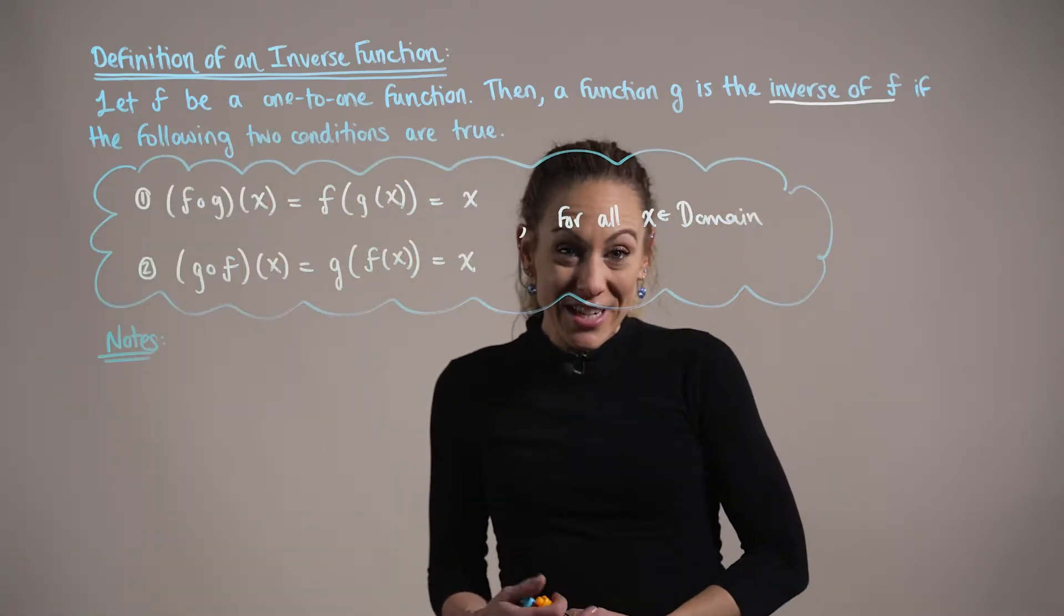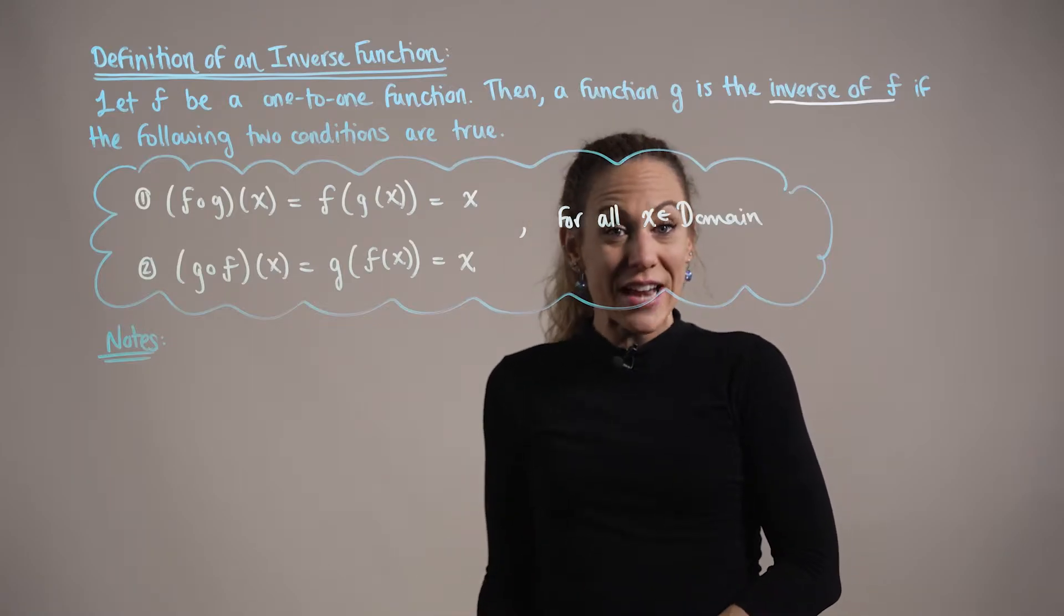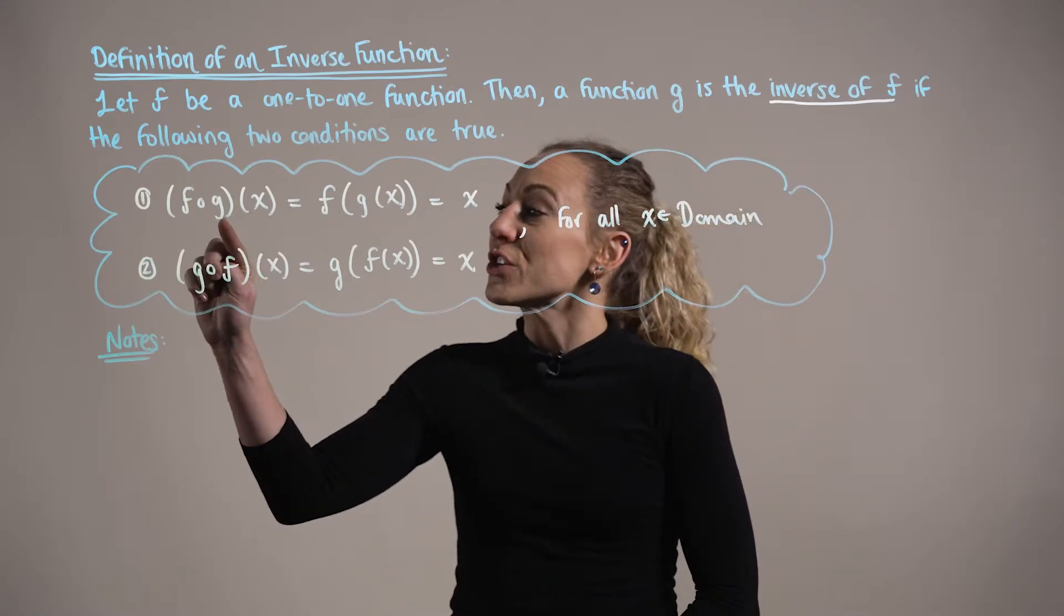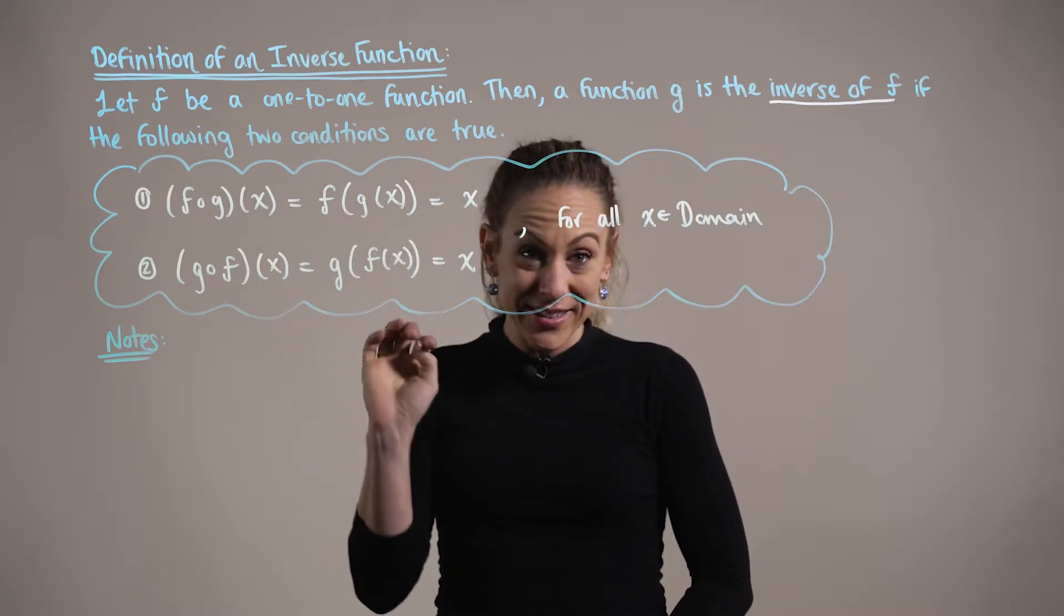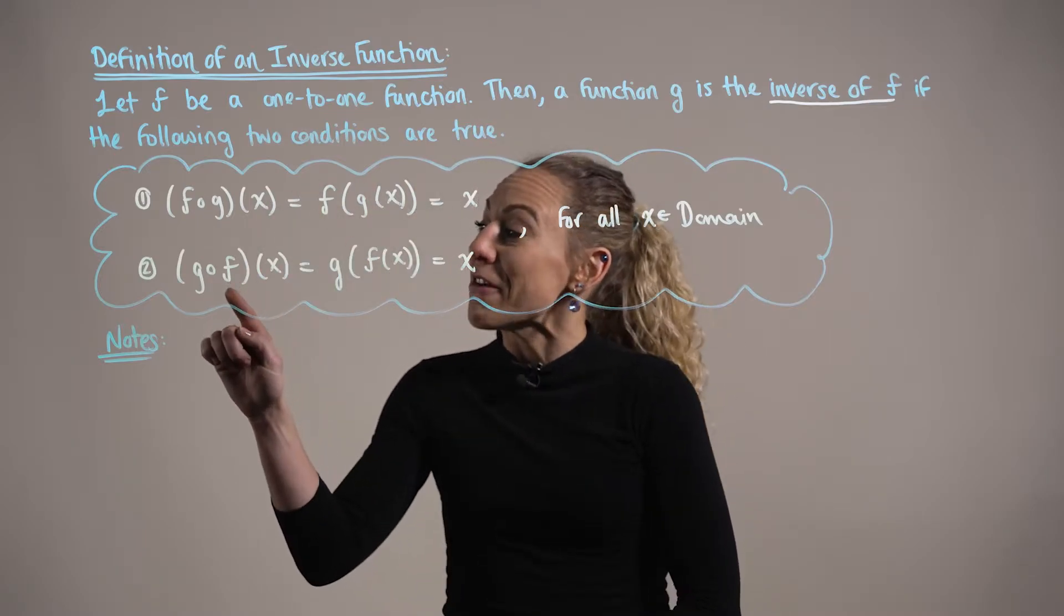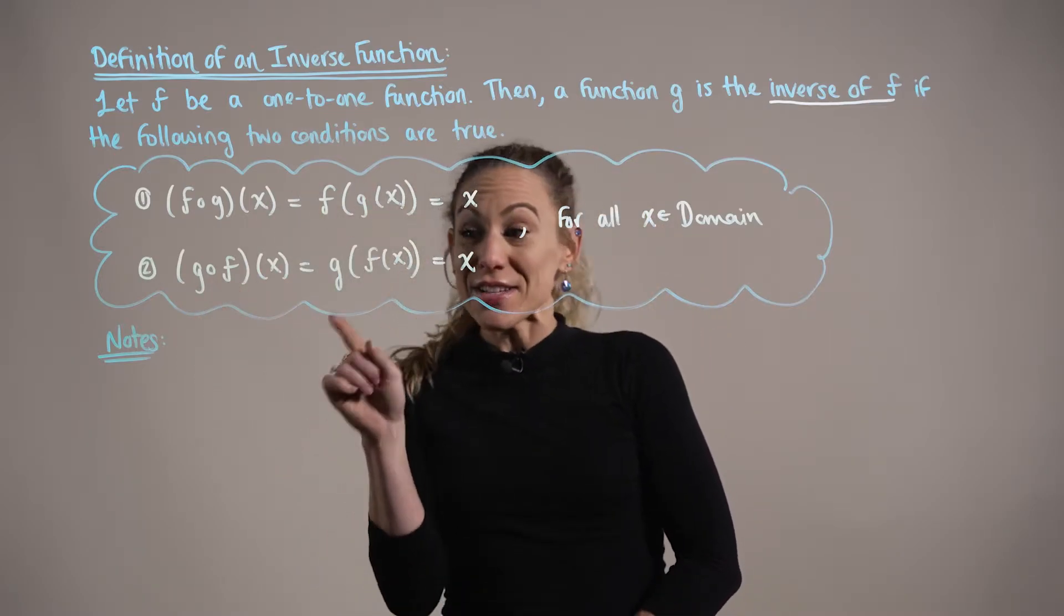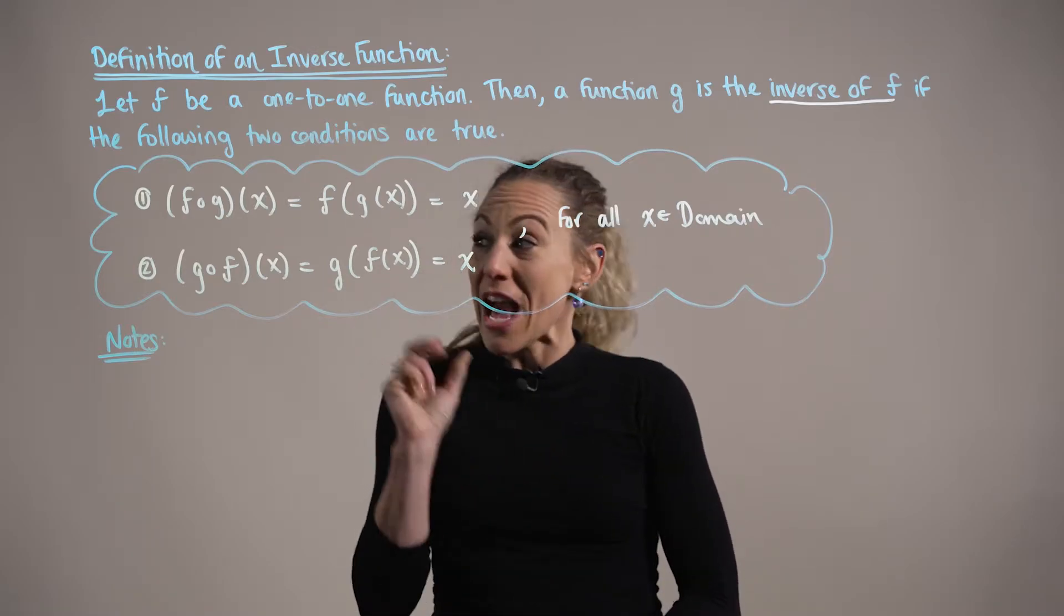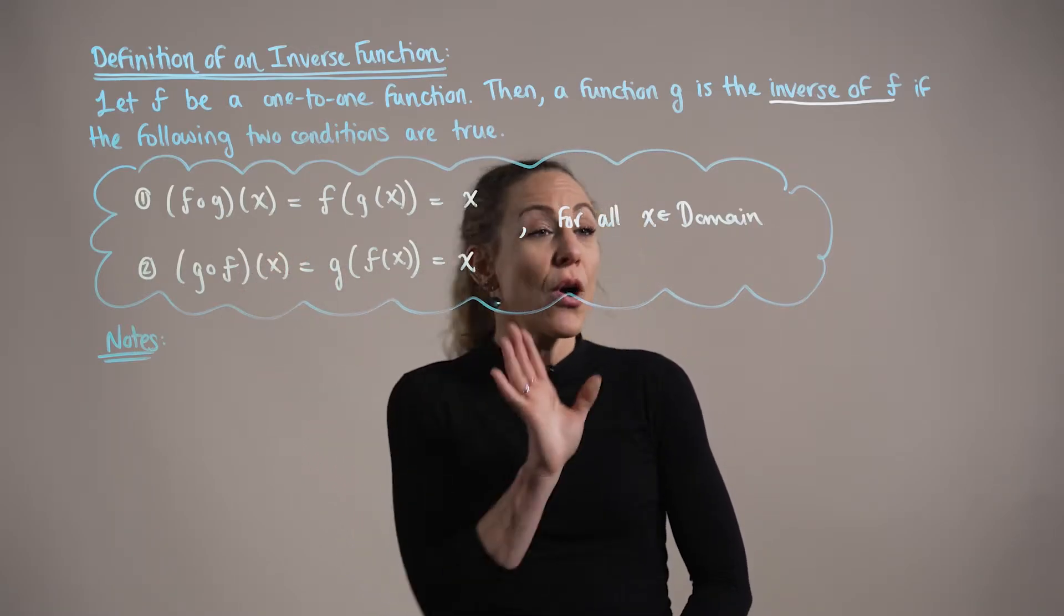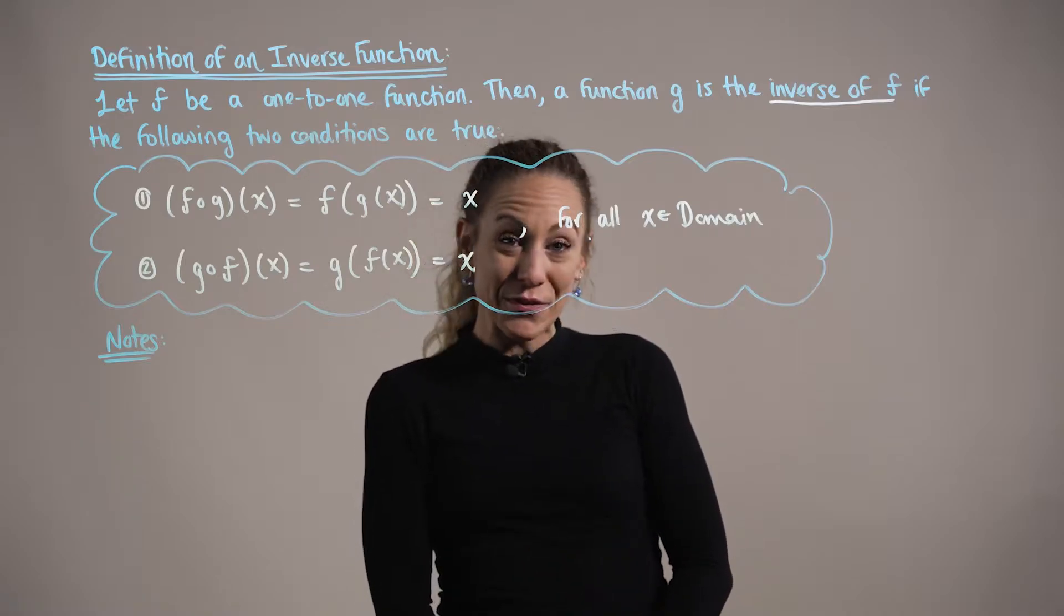We say that g is the inverse of our function f if the composition g followed by f is equal to x, and if f followed by g of x is also equal to x. And both of these must hold true for all x in the domain of the function.